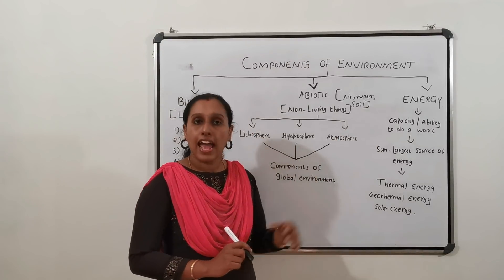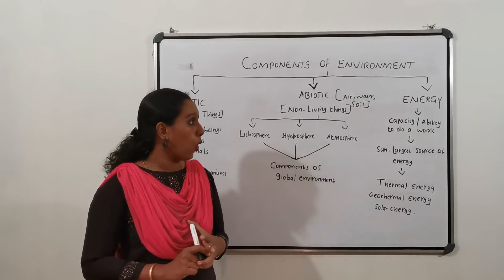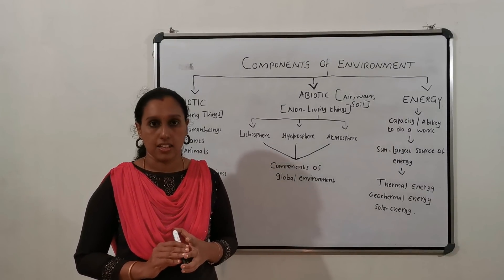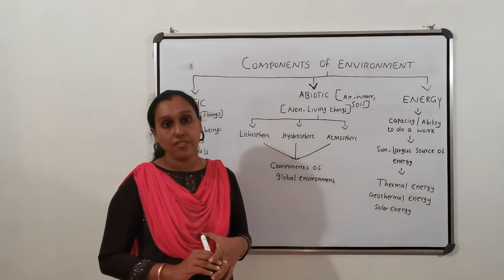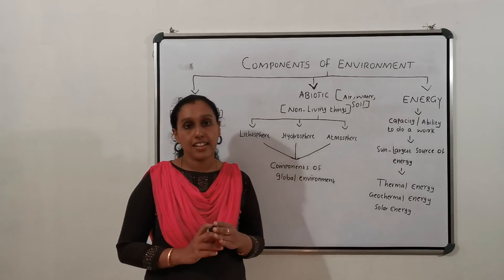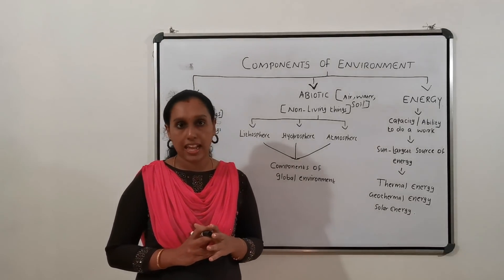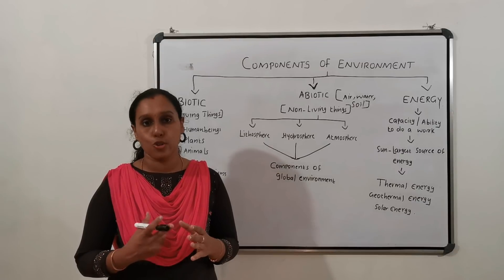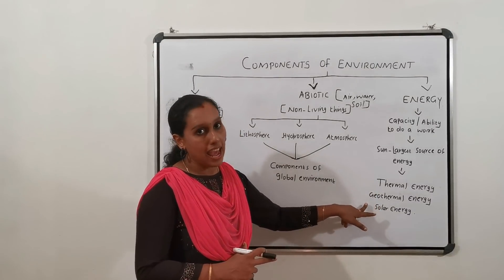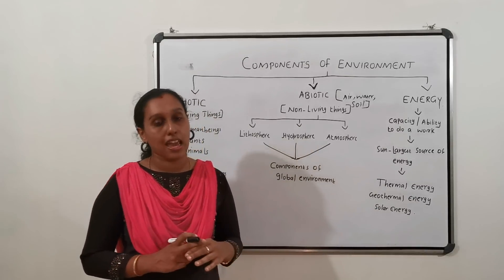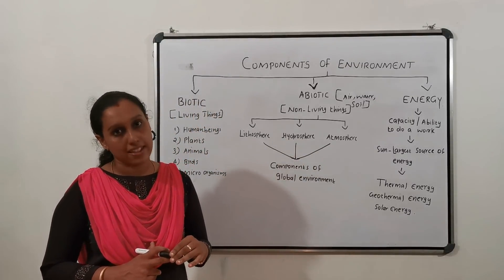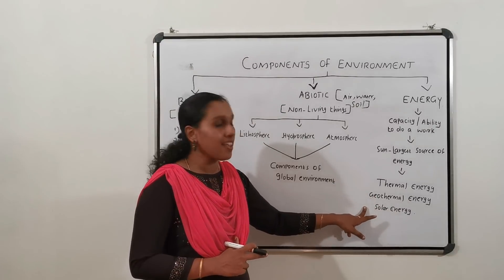The third component is energy. Energy is the ability or capacity to do work. We need energy to grow or survive. Animals, birds and plants also need energy to grow and survive. Different forms of energy are thermal energy, geothermal energy and solar energy. The sun is the largest source of energy.